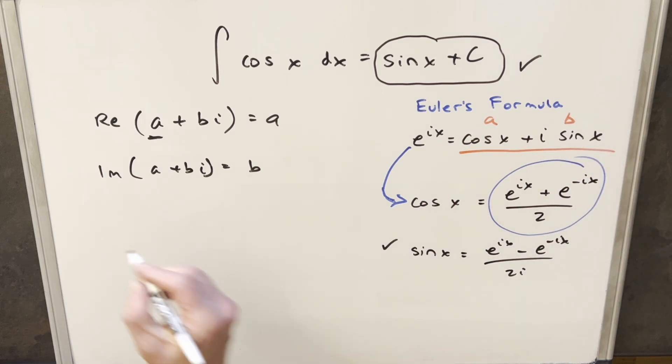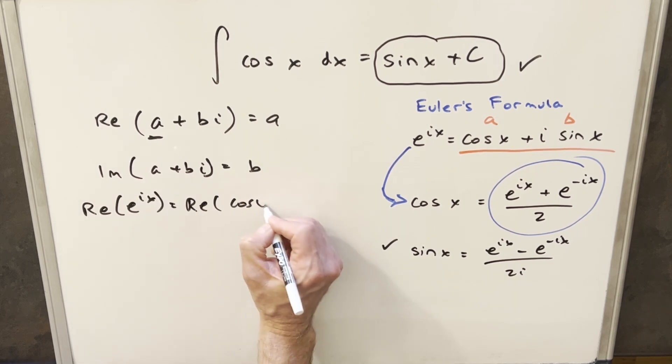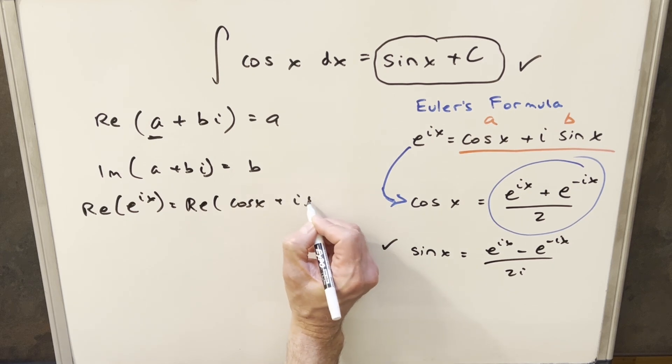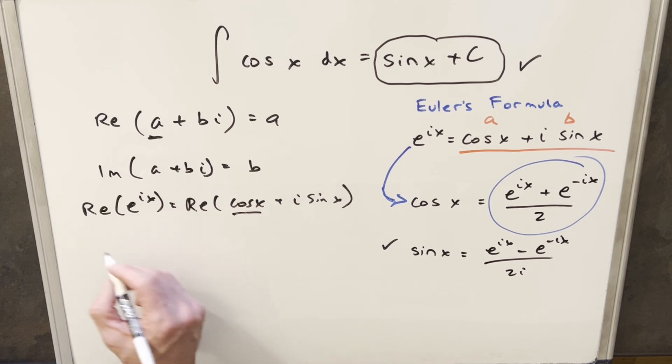But then coming over to our Euler's formula, we'll notice we have a complex number in that form, where we have it in this a plus bi notation. So what we can do with this, if we just look at the real part of e^(ix), well, that's going to be the real part of cos x plus i sine x. And so this is just going to return our a, this real part, and it's just going to give us cosine of x.